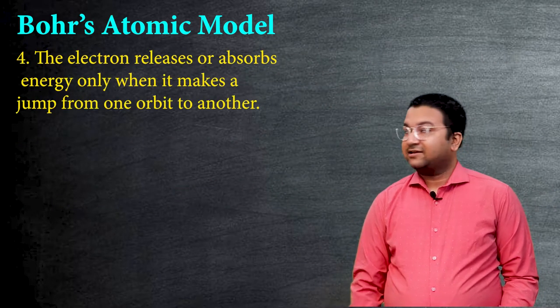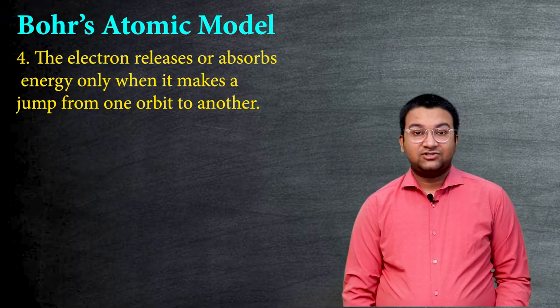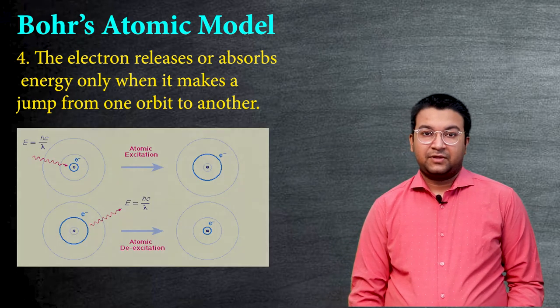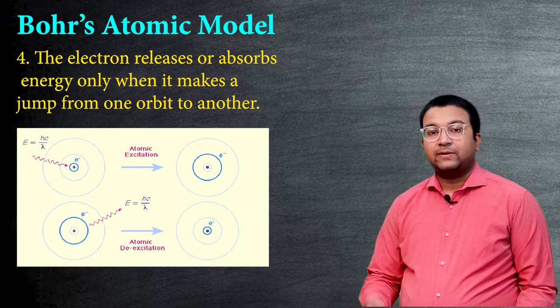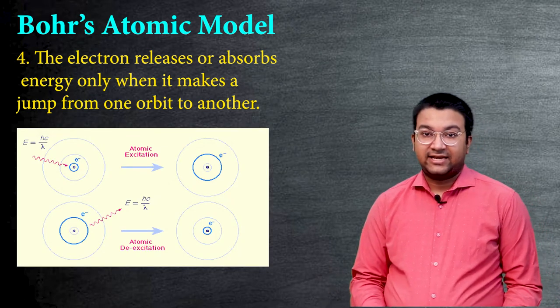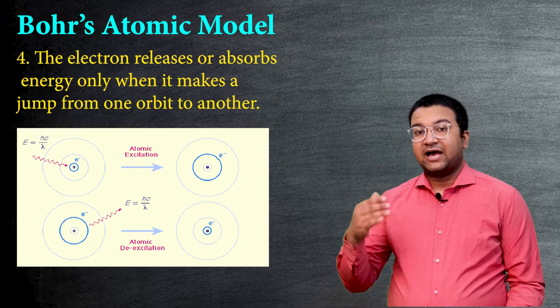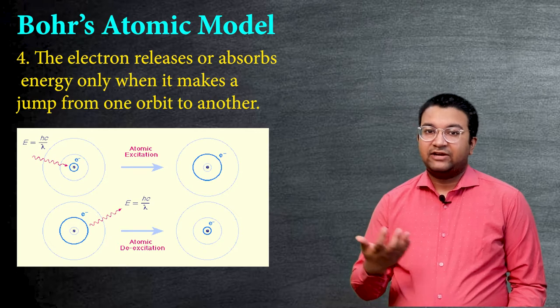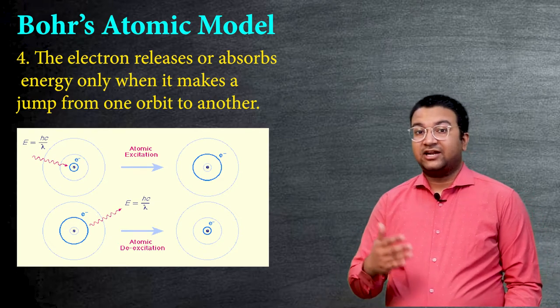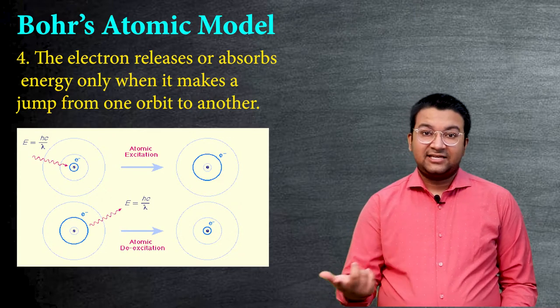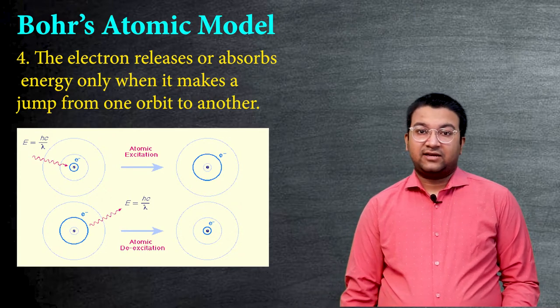The next point is that any electron can release or absorb energy only when it jumps from one orbit to another. Which means that if it jumps from a lower orbit which is lesser in n value to any higher orbit, it will absorb energy. And if it jumps from a higher orbit to a lower orbit, it will release energy. Why? Because the energy differences of these two orbits will be released as the irradiating part of that atom.